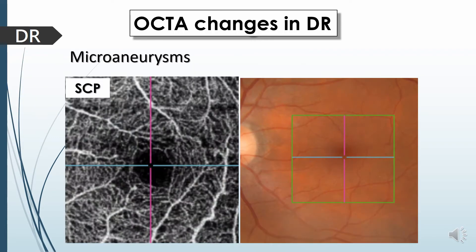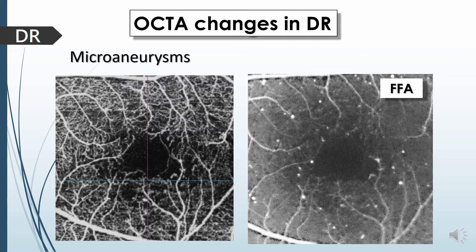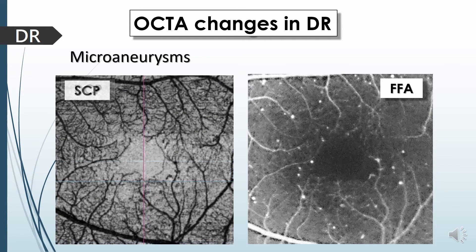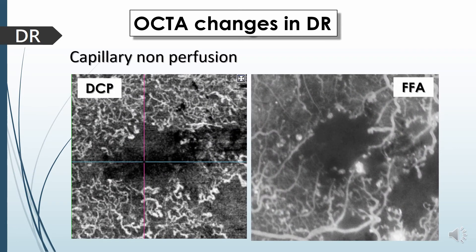Regarding OCT angiography changes in diabetic retinopathy, microaneurysms appear as coiled structures or fusiform or small dilated knobs seen in the superficial and deep capillary plexuses, but unfortunately they are not well delineated compared to fluorescein angiogram. OCT-A is claimed to depict only 50% of microaneurysms seen in FFA, most of these located at the deep capillary plexus. One of the most important values of OCT-A is evaluation of the extent of capillary non-perfusion better than FFA, which appears as an area of low flow signals, widening of the foveal avascular zone, and telangiectatic changes at the edge of the FAZ.